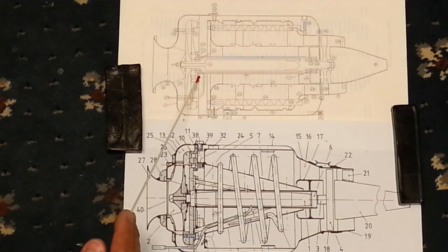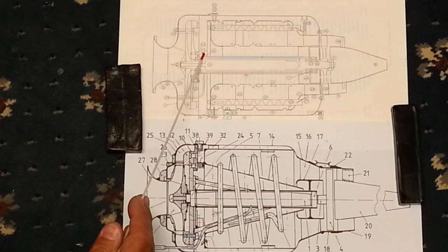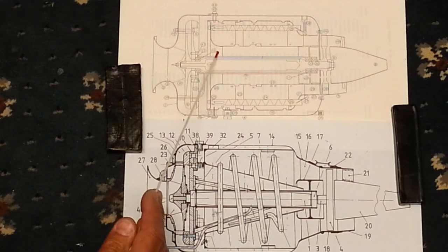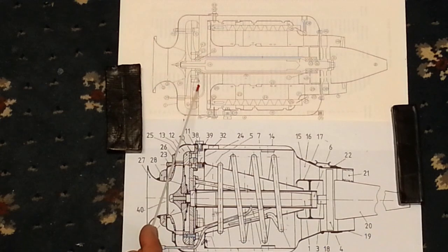He's almost closed it off here, but again he's taking air from here and he's trying to get his oil as close as he can to this front bearing. The latest KJ66 design has done that, where the oil tube comes to the front of the bearing, so it's almost like standard practice.